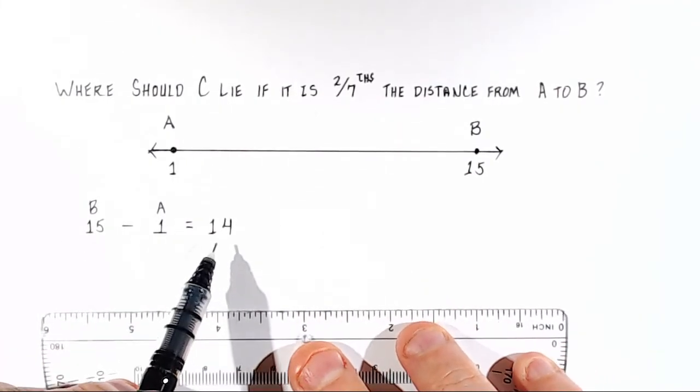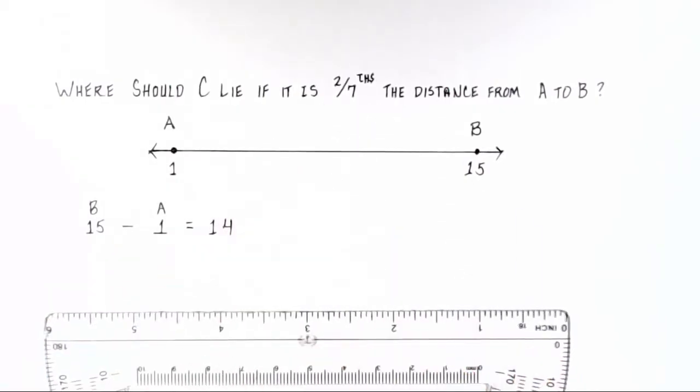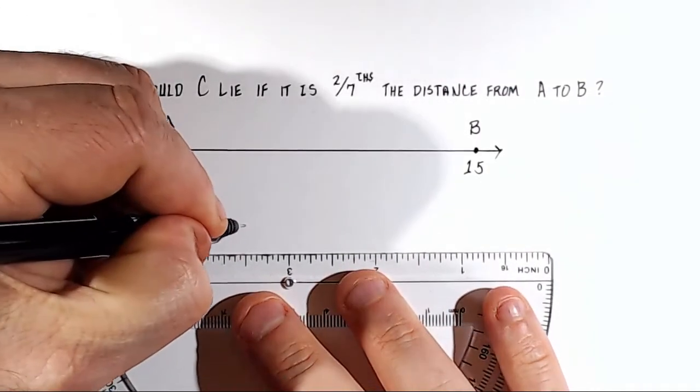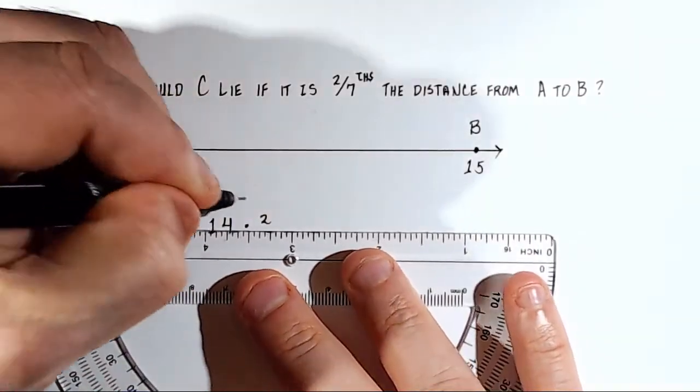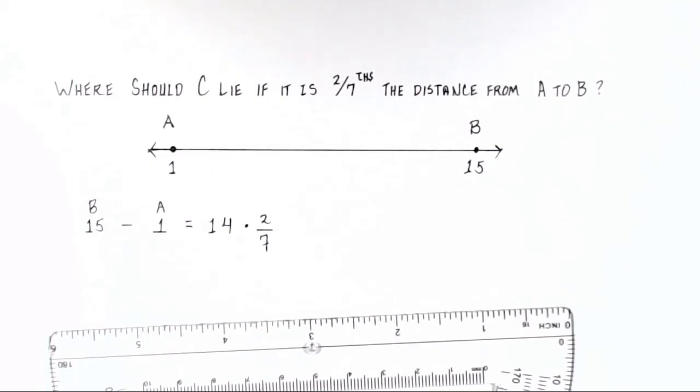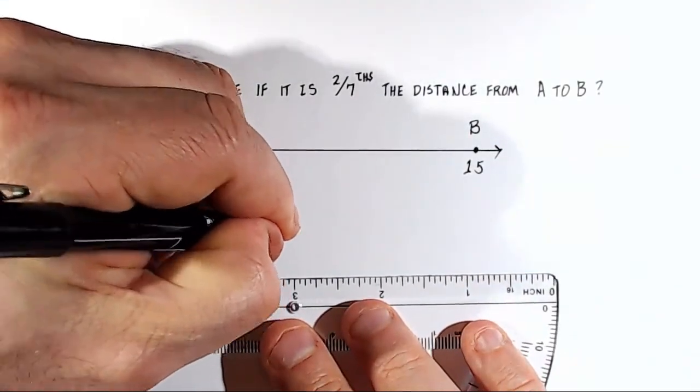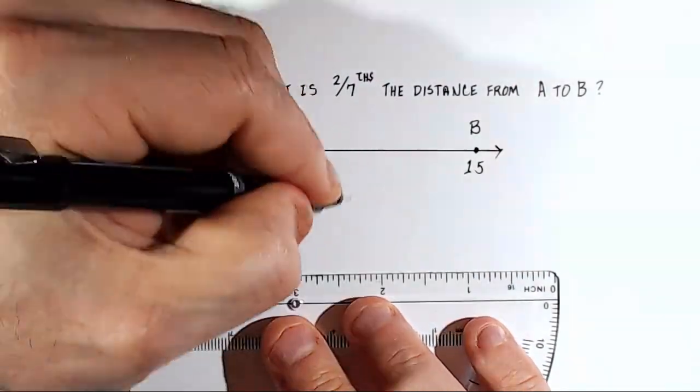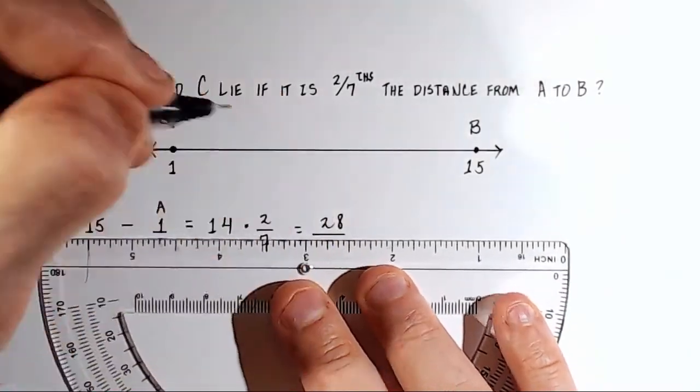You take your absolute distance and multiply it by whatever fractional distance they're looking for. In this case, it's two-sevenths, so you take 14 times two-sevenths. We multiply the top by the whole number, so we multiply 14 times 2, and we get 14 times 2 is 28 over 7.